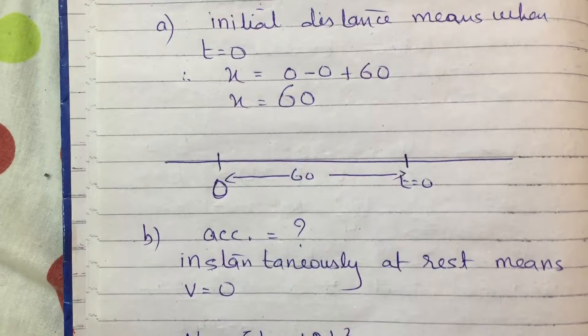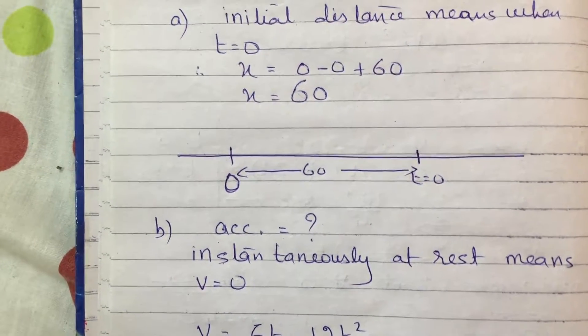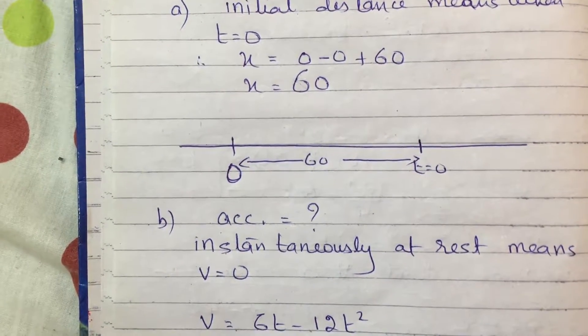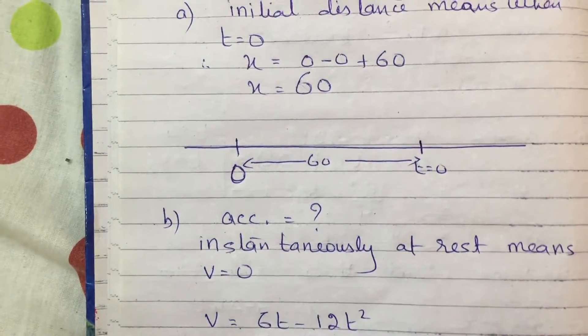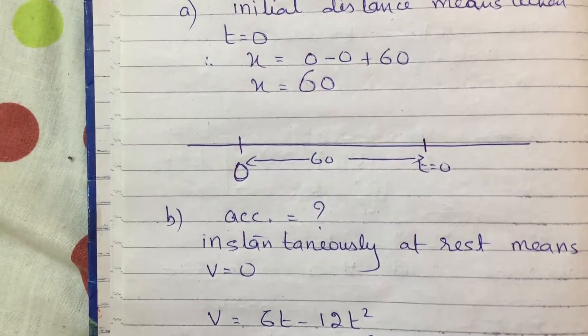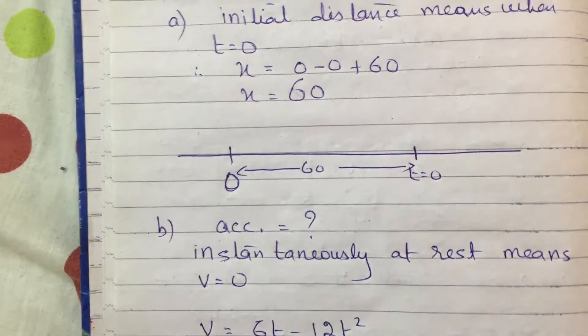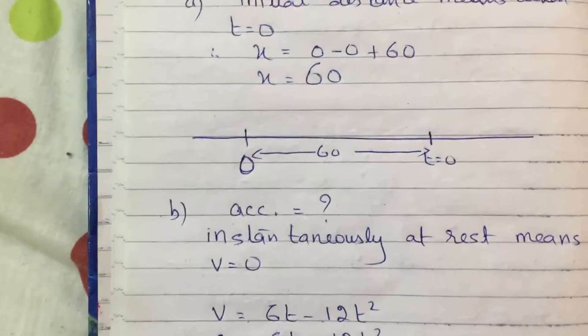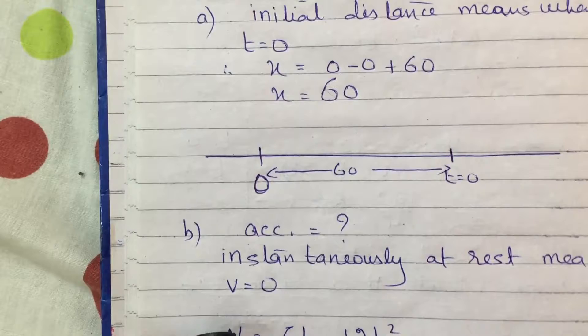Now the time I will get by putting v equals 0, at that time the object will take reverse direction. If it is going right it will move left. If it is moving left it will take right. So this is the meaning of instantaneously at rest. So we will put v equals 0.